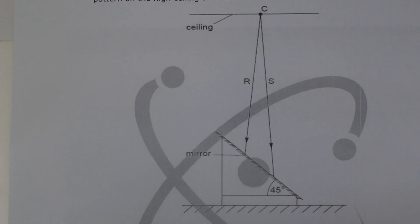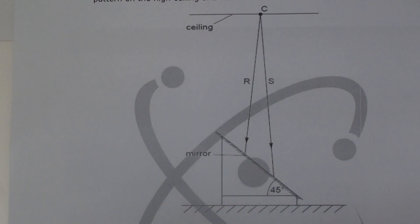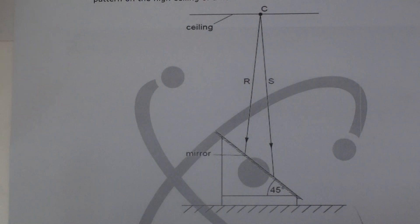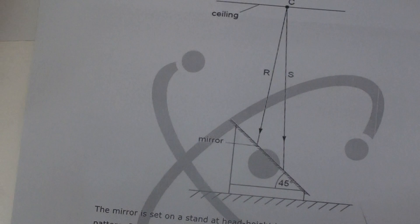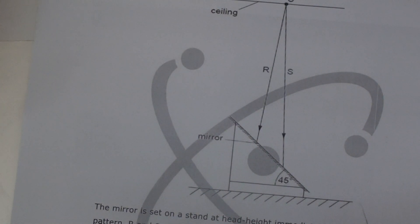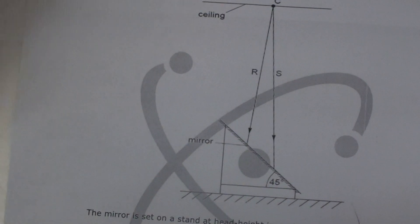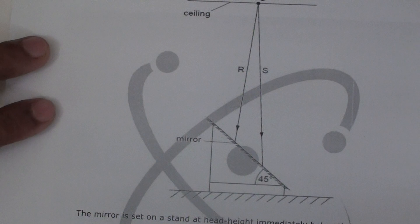There are two ways to do this question since they've asked about the angle. I want to show you the proper way first so you can understand it clearly, and then I'll discuss the shortcut. First, we need to draw the normal on the tilted mirror.